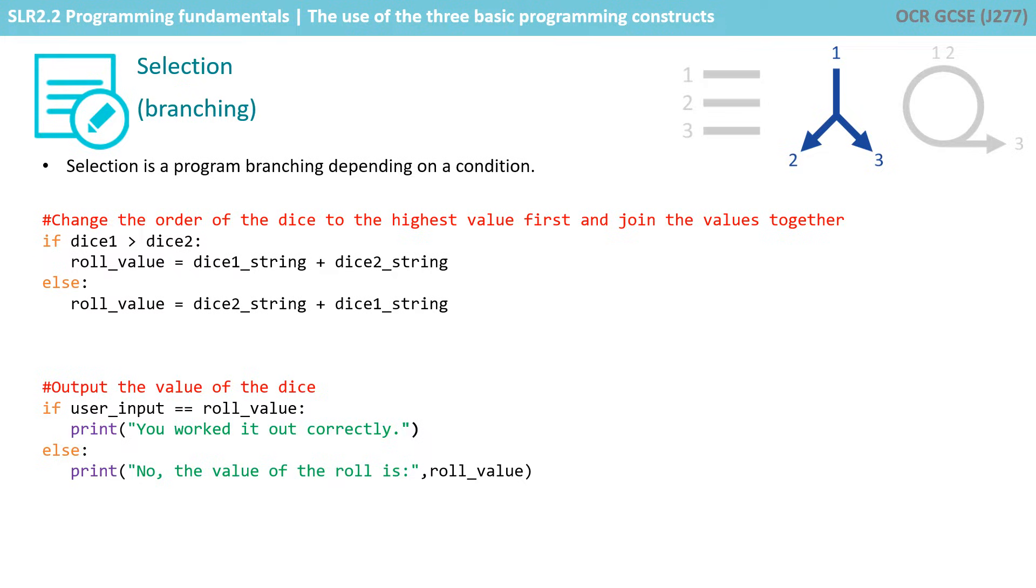Here we can see at the bottom, if user input equals role value, print 'you worked it out correctly'. Otherwise, print 'no, the value of the role is something else'. This is really common and is the first typical selection or branching statement you learn.